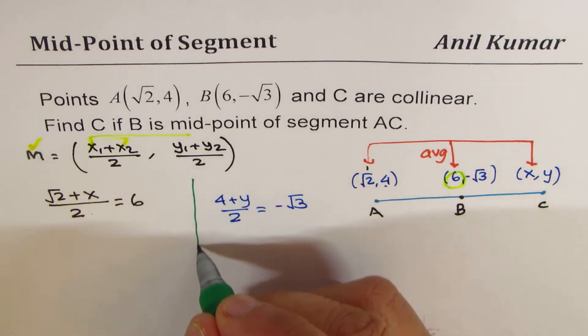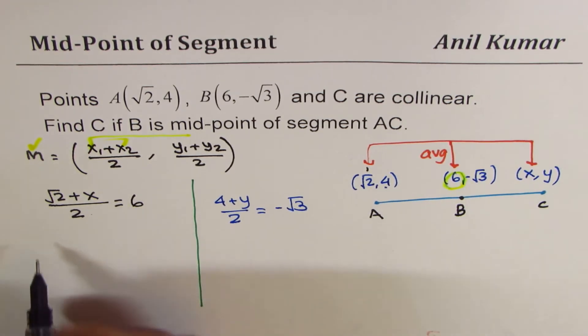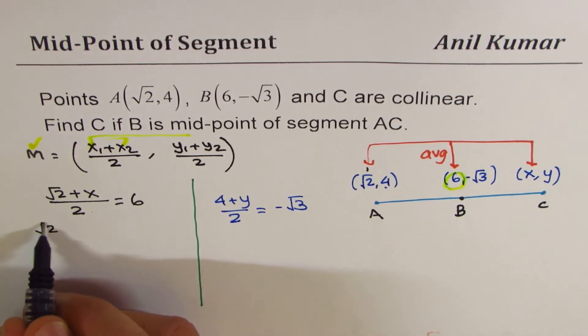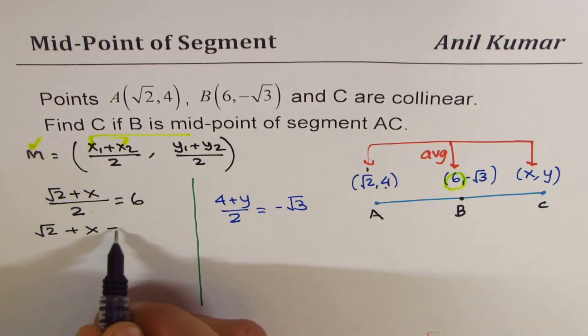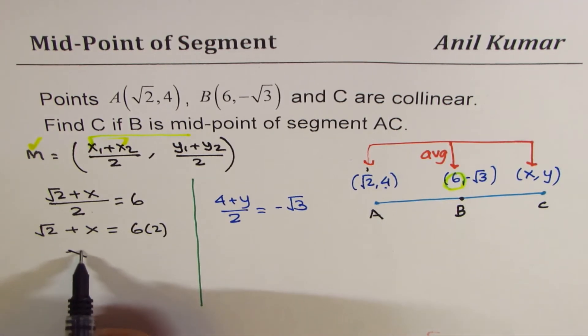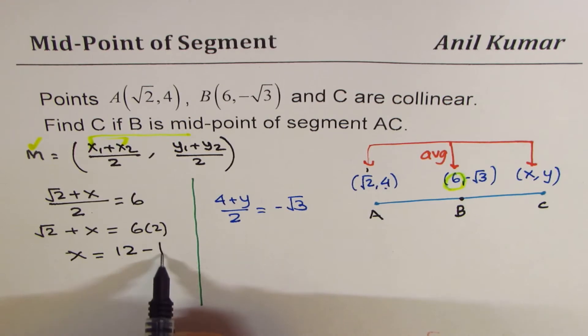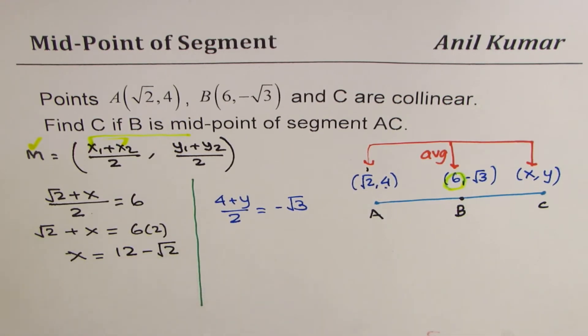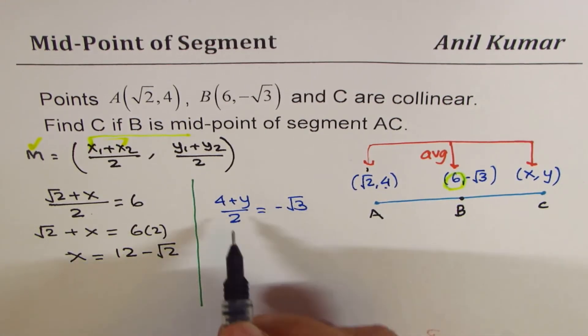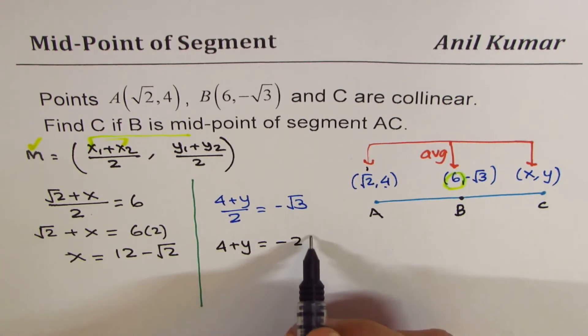Let's solve. Solving is simple—just cross multiply. √2 + x = 2 × 6, which is 12. Bring this to the other side, so we get x = 12 - √2. Similarly, on this side we have 4 + y = -2√3.